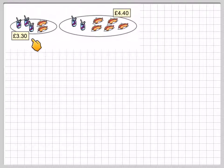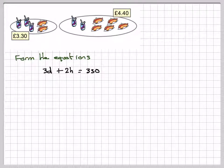We're going to form a simultaneous equation for this situation. So in the first plate here, forming the equations, we've got three drinks and two hot dogs, and that costs 330 pence. We're going to use pence again. And then on the second tray here, we've got two drinks and five hot dogs, and that's 440.